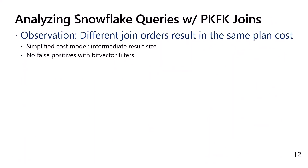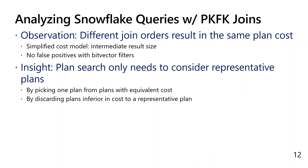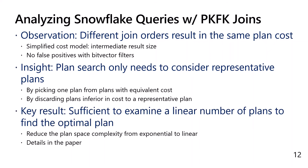We can extend our analysis to snowflake queries with PKFK joins. Our key insight remains that the plan search only needs to consider representative plans. We prove that it is sufficient to examine a linear number of plans to find the optimal plan.